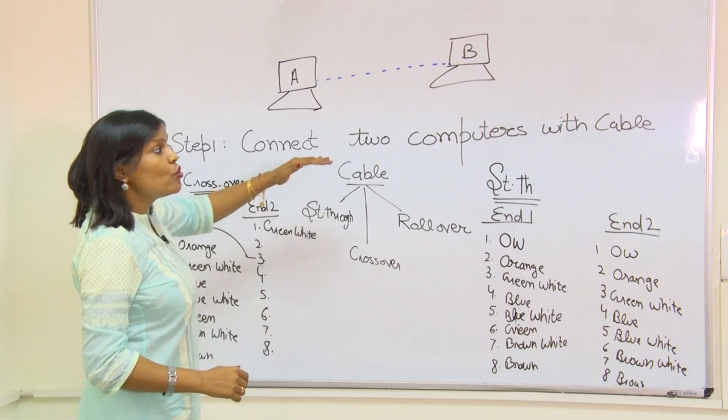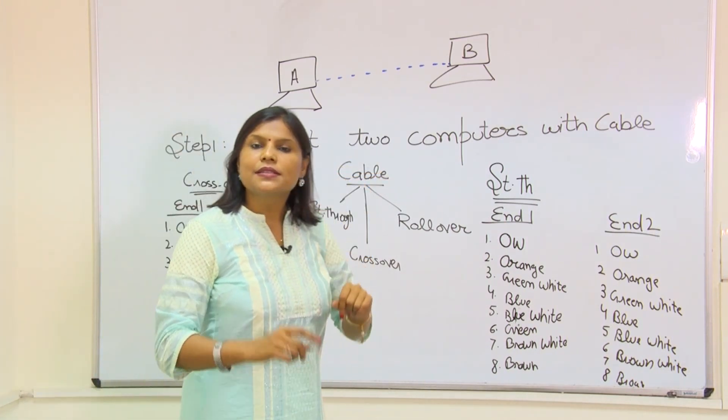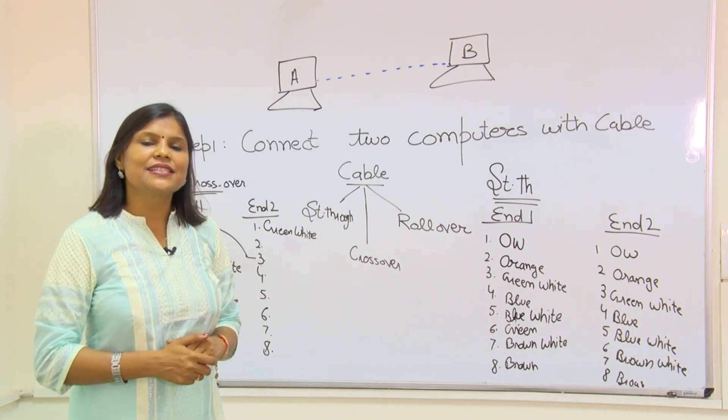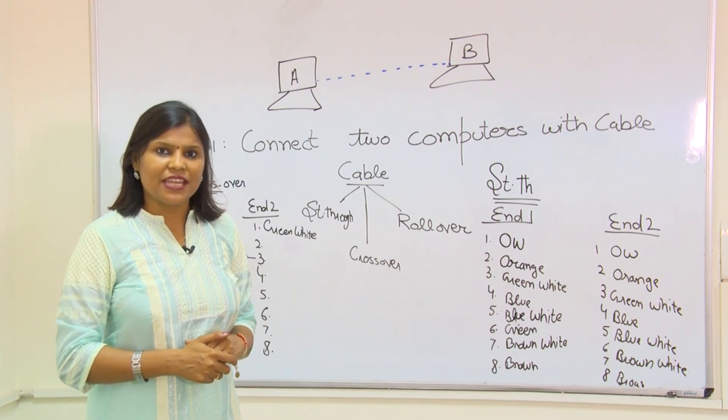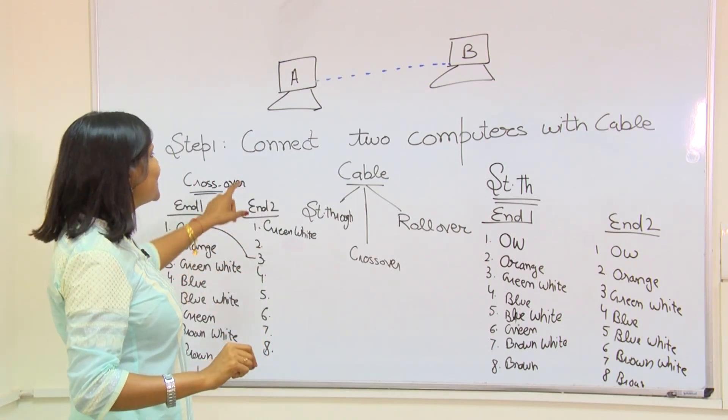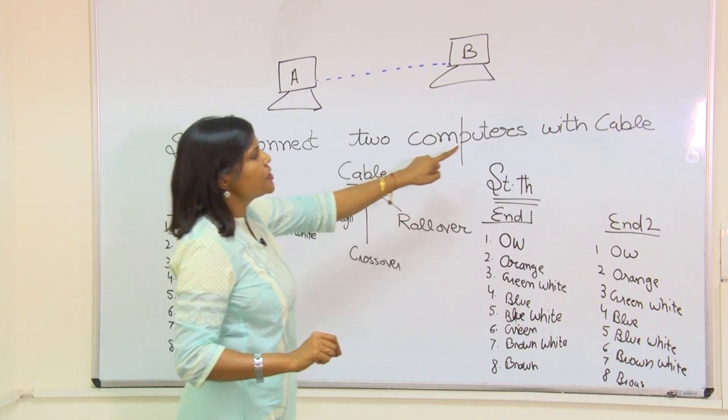Step 1: connect two computers with cable. Step 2: change the IP addresses. And step 3: verify the connectivity. But here start with the step 1, that is connect two computers with cable.